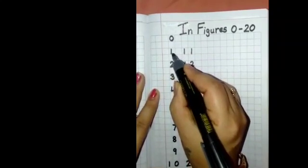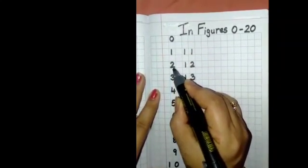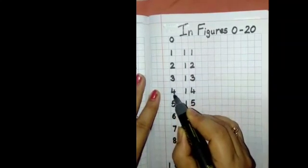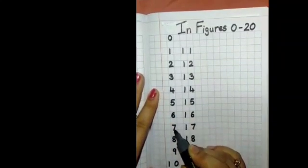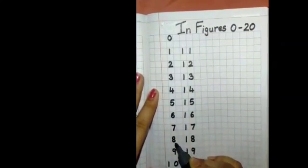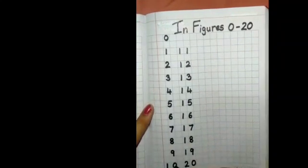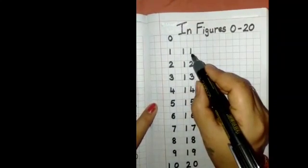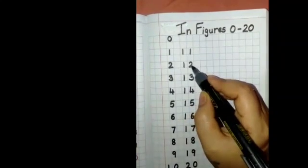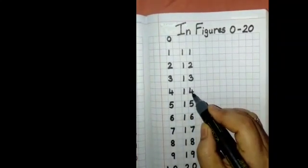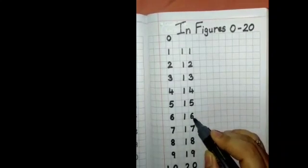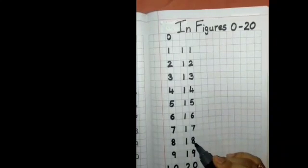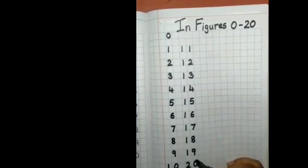0, 1, 2, 3, 4, 5, 6, 7, 8, 9, 10, 11, 12, 13, 14, 15, 16, 17, 18, 19, 20.